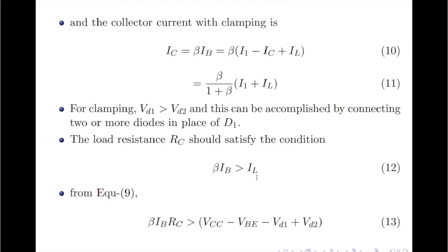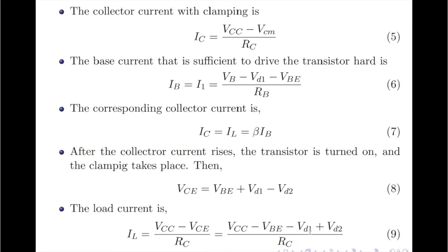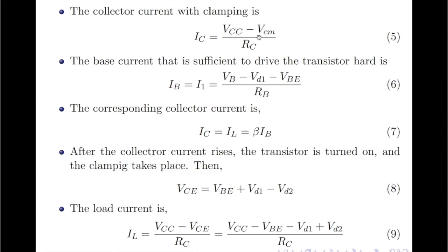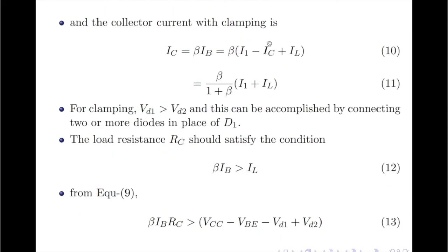Substituting for IL from equation 9 and taking RC to the LHS, we get: β × IB × RC > VCC − VBE − VD1 + VD2. Comparing equation 13 — the collector current IC after clamping — with the collector current equation before clamping, we find that the numerator in equation 5 before clamping is considerably higher than after clamping. Therefore, the clamping action reduces the collector current while almost eliminating the storage time, providing a faster turn-on time for the transistor.